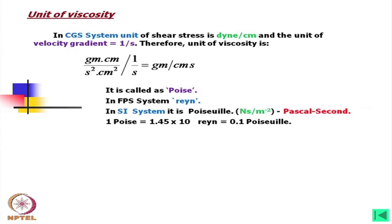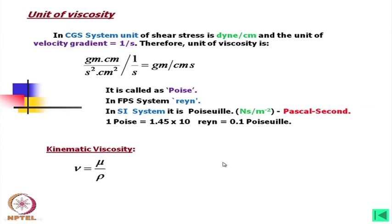The relation is: 1 poise equals 1.45×10⁻⁵ (in FPS units), and 1 centipoise equals 0.1 poise. Now, kinematic viscosity — although viscosity normally means dynamic viscosity and almost all calculations use dynamic viscosity — kinematic viscosity is simply the dynamic viscosity divided by the density, where ρ is density and μ is dynamic viscosity.